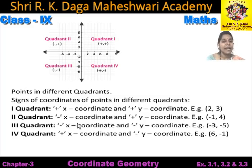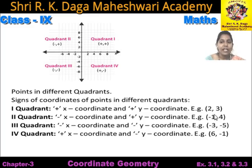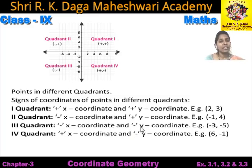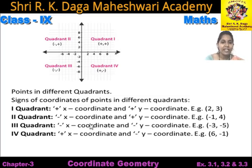Signs of coordinates of points in different quadrants: in first quadrant, x coordinate is positive and y coordinate is positive, for example (2, 3). In second quadrant, x coordinate is negative and y coordinate is positive, for example (-1, 4). In third quadrant, both numbers are negative, so x coordinate is negative and y coordinate is also negative, for example (-3, -5). In fourth quadrant, x is positive and y is negative, for example (6, -1).